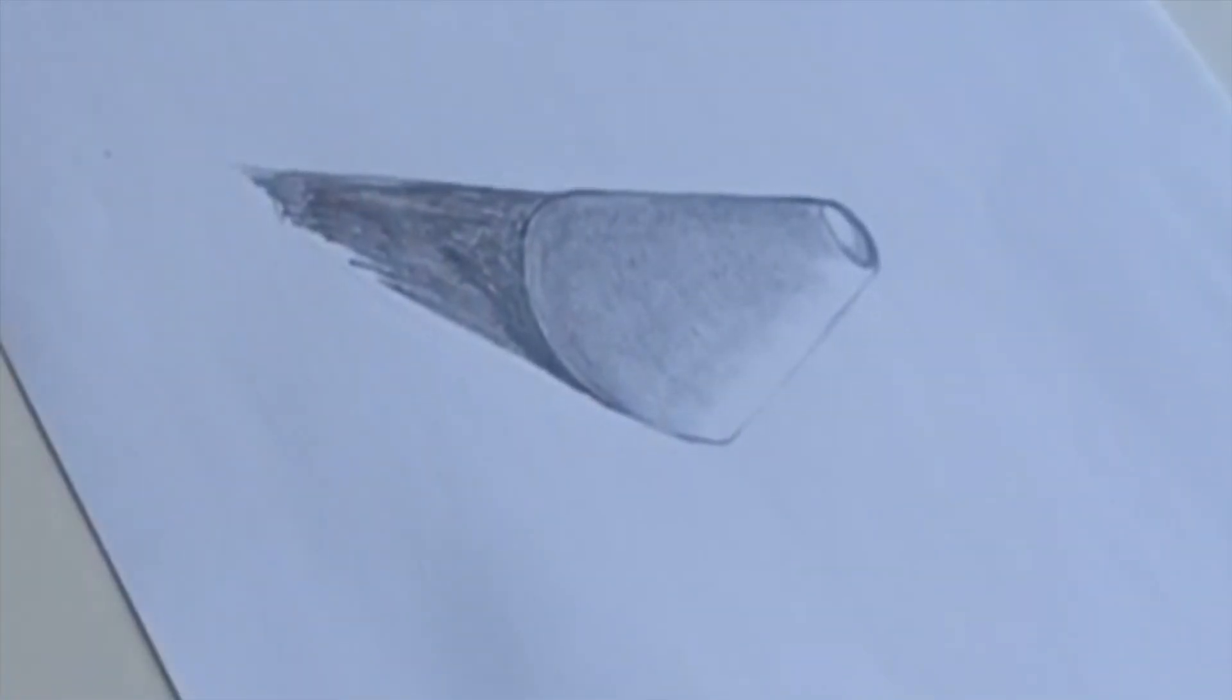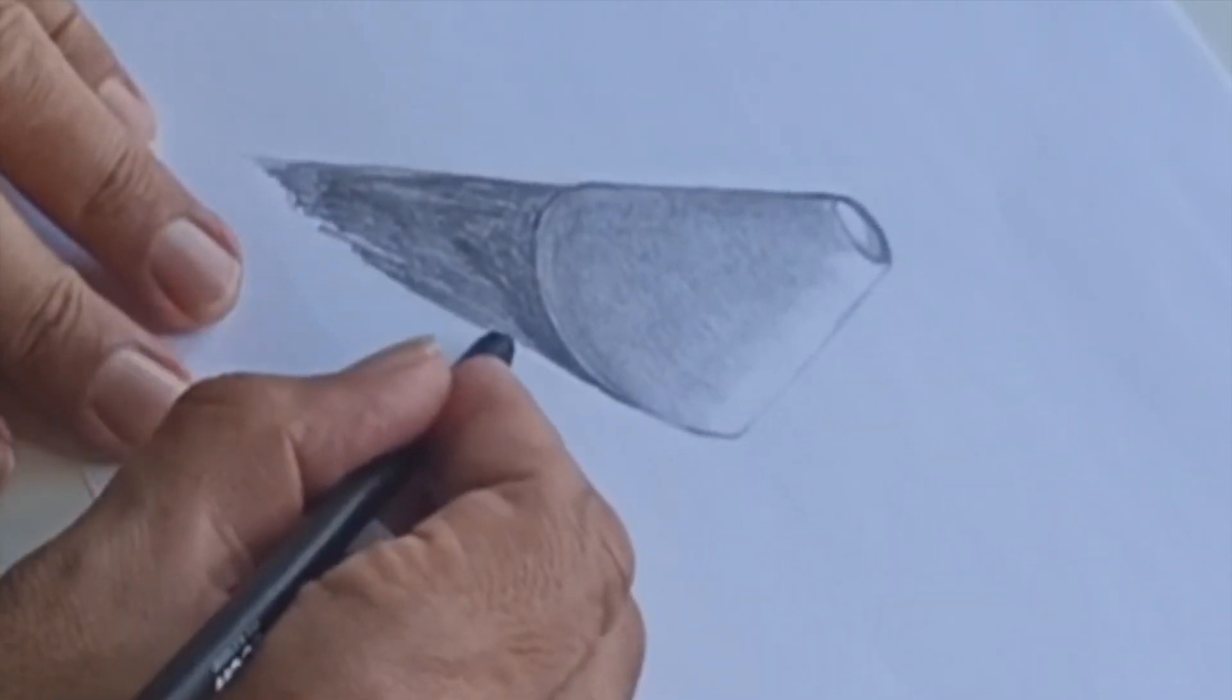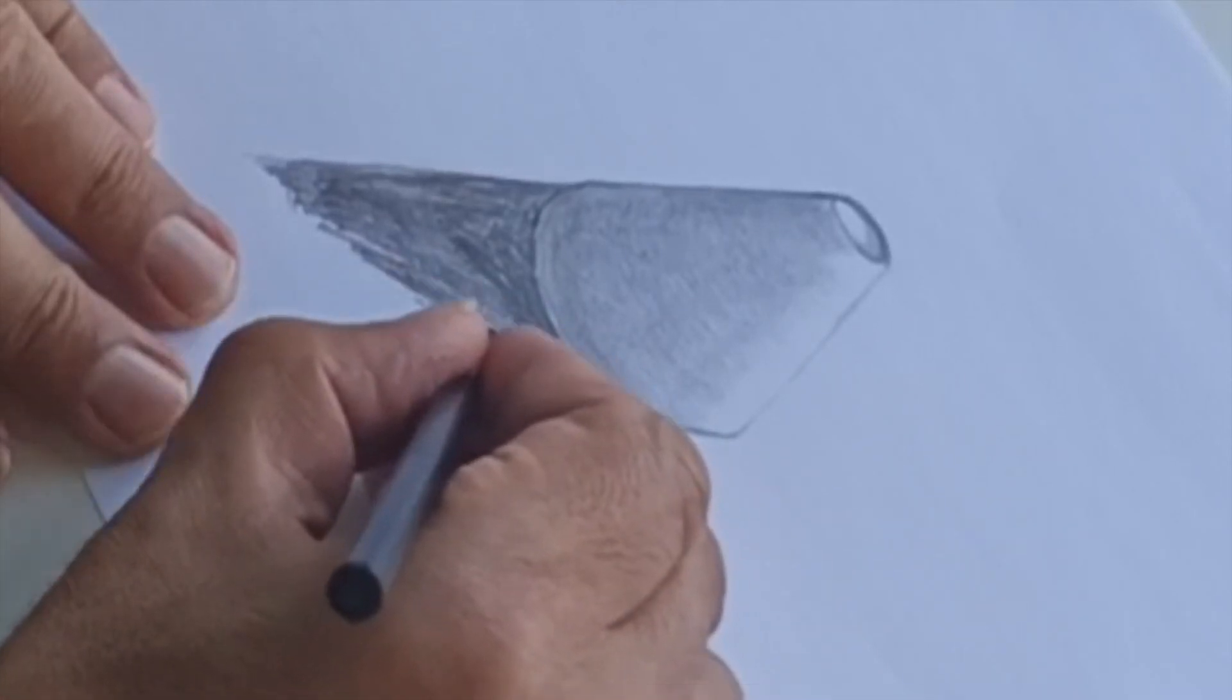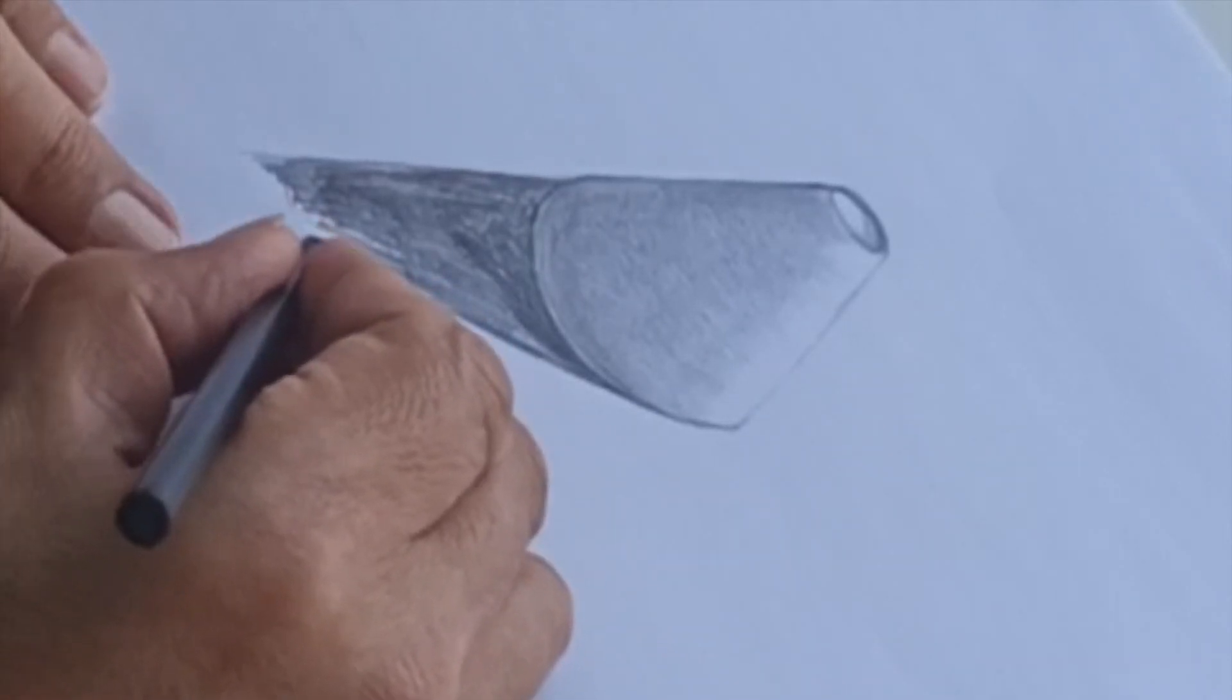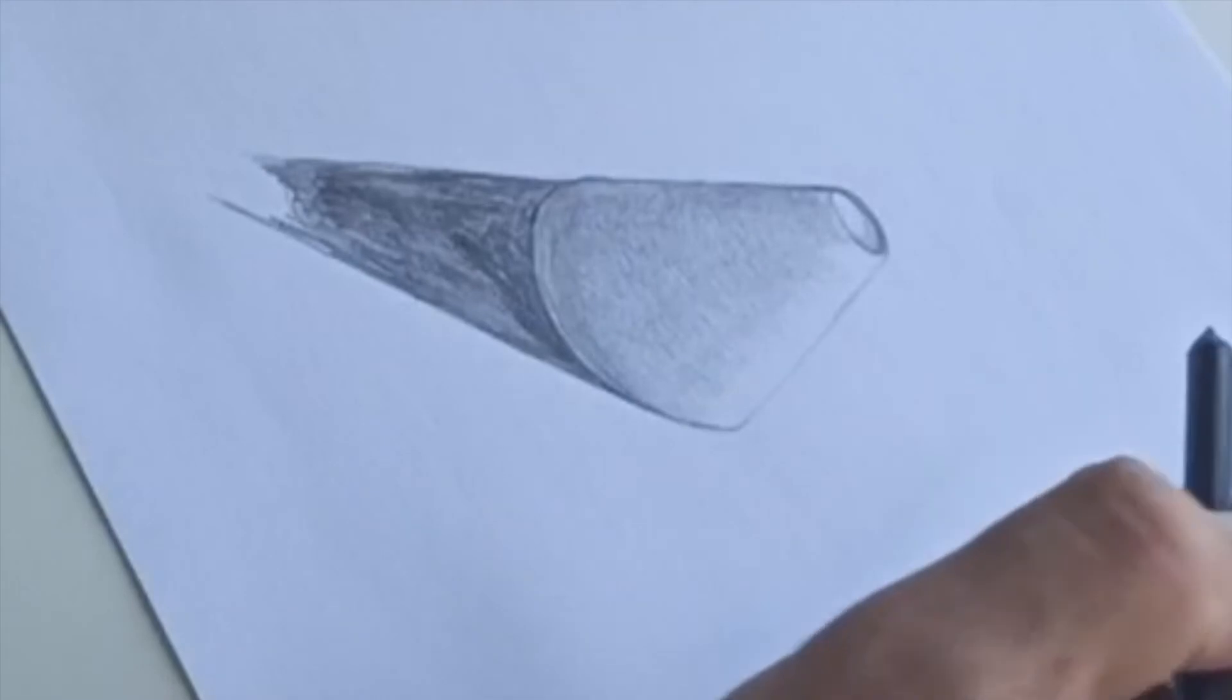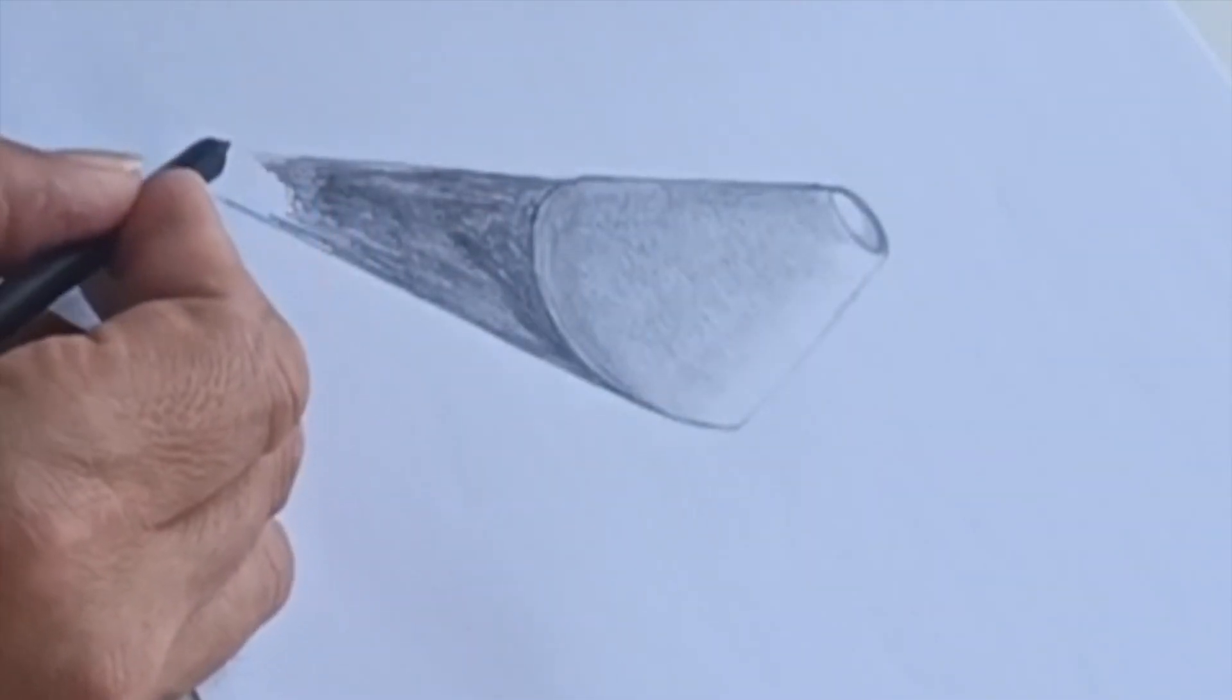I like that. Now the shadow is going to be longer than the item, which equals where the sun is positioned. Because it's further down, so the further down it is here, the further the shadow is cast.